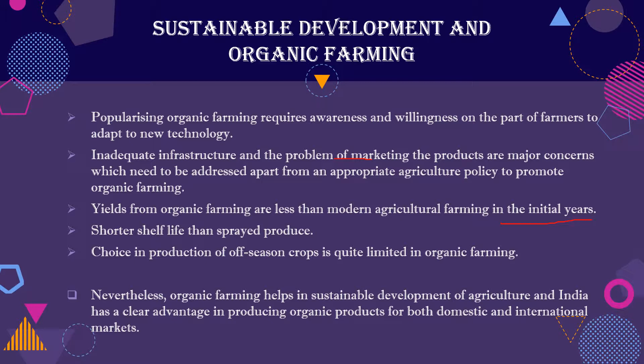Then, because pesticides and fertilizers are not used, farmers always have to protect crops from insects. Organic produce has a shorter shelf life. The choice in production of off-season crops is very limited — they are very focused on limited crops. This is why farmers are reluctant to adopt organic farming. The yield is a little bit lower, especially in initial years, and it has a shorter shelf life that requires careful handling.